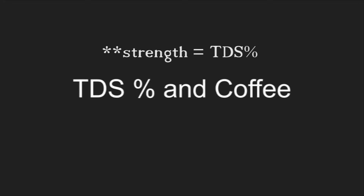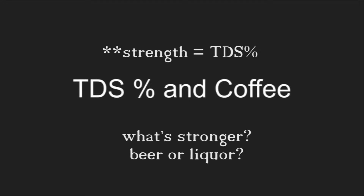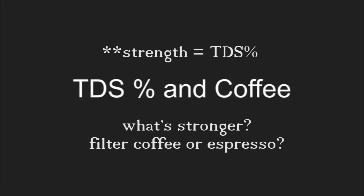The analogy I want to use to illustrate strength is beer versus distilled spirits. A Miller Lite has less alcohol content per milliliter than, say, Grey Goose Vodka. The parallel in coffee is espresso versus filter coffee, but both of those individually can have differing strengths — just like vodka might range from 35% to 45% alcohol content by volume, espresso too can have different ranges of concentration.